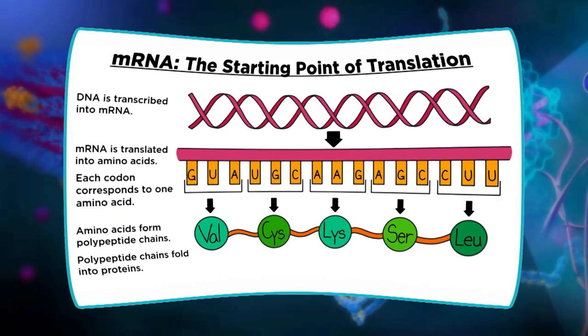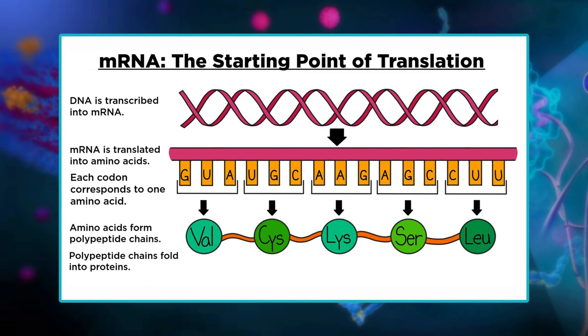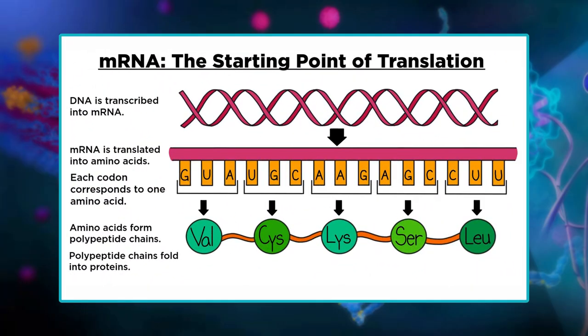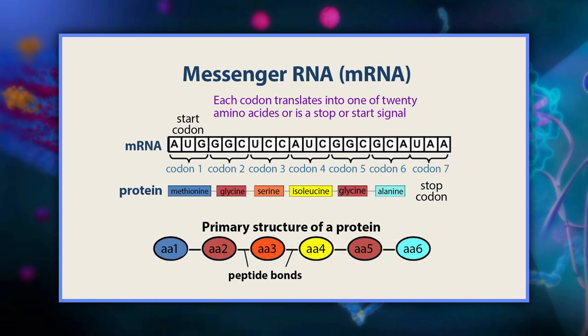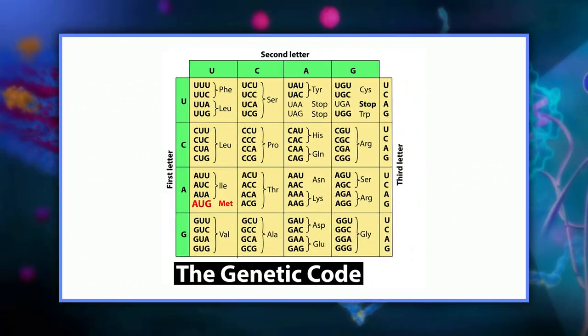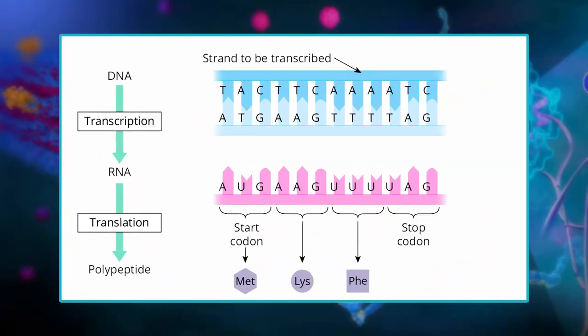During translation, a cell reads the information in an mRNA and uses it to build a protein. An mRNA doesn't always encode a whole protein; what we can confidently say is that it always encodes a polypeptide or a chain of amino acids. In an mRNA, the instructions for building a polypeptide are RNA nucleotides read in groups of three — these groups of three are called codons. There are 61 codons for amino acids, each specifying a certain amino acid out of the 20 commonly found in proteins. Codon AUG specifies methionine and also acts as a start codon.